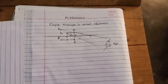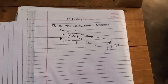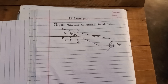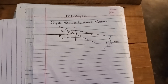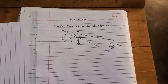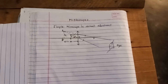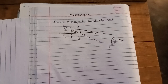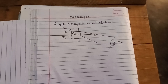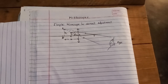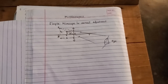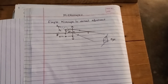Today we are looking at the microscope as an optical instrument. Microscopes are optical instruments used to view nearby objects. They are categorized into two types: the simple microscope and the compound microscope. Today we are going to look at the simple microscope; we shall look at the compound microscope next week.